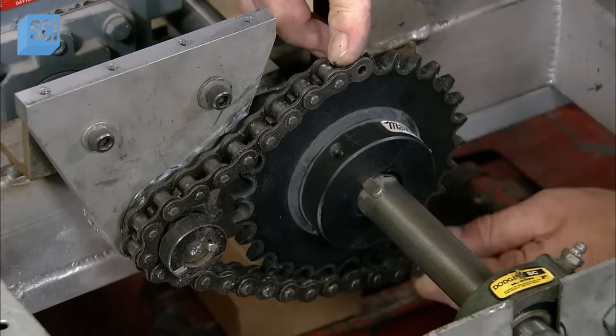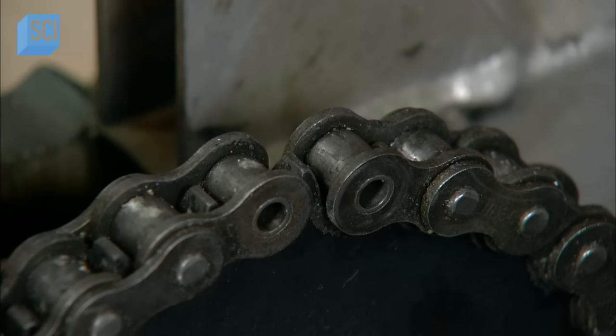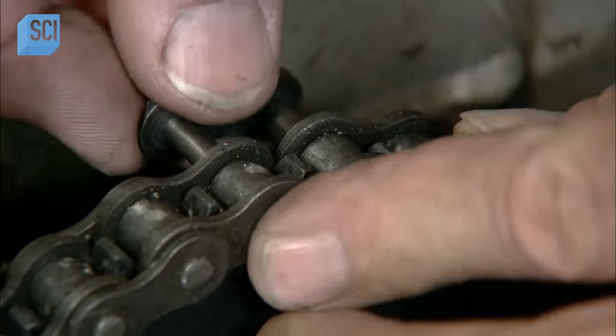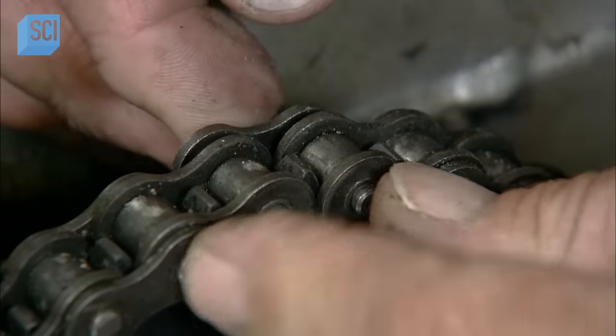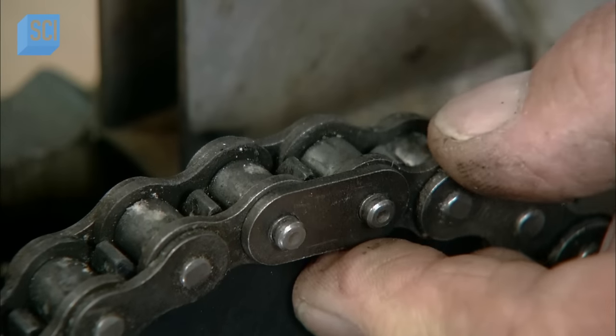He loops a roller chain around the sprocket gear for the rear wheel drive and the teeth intermesh. He drives pins through the links to join the ends, closing the loop. This drive chain is powered by an electric motor.